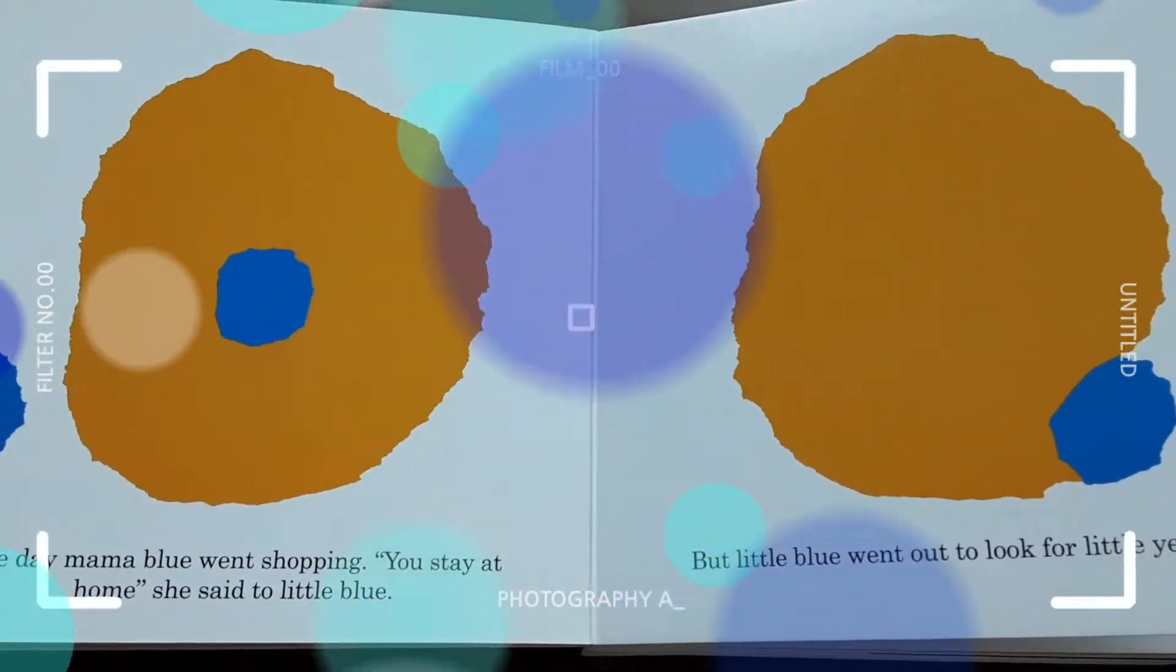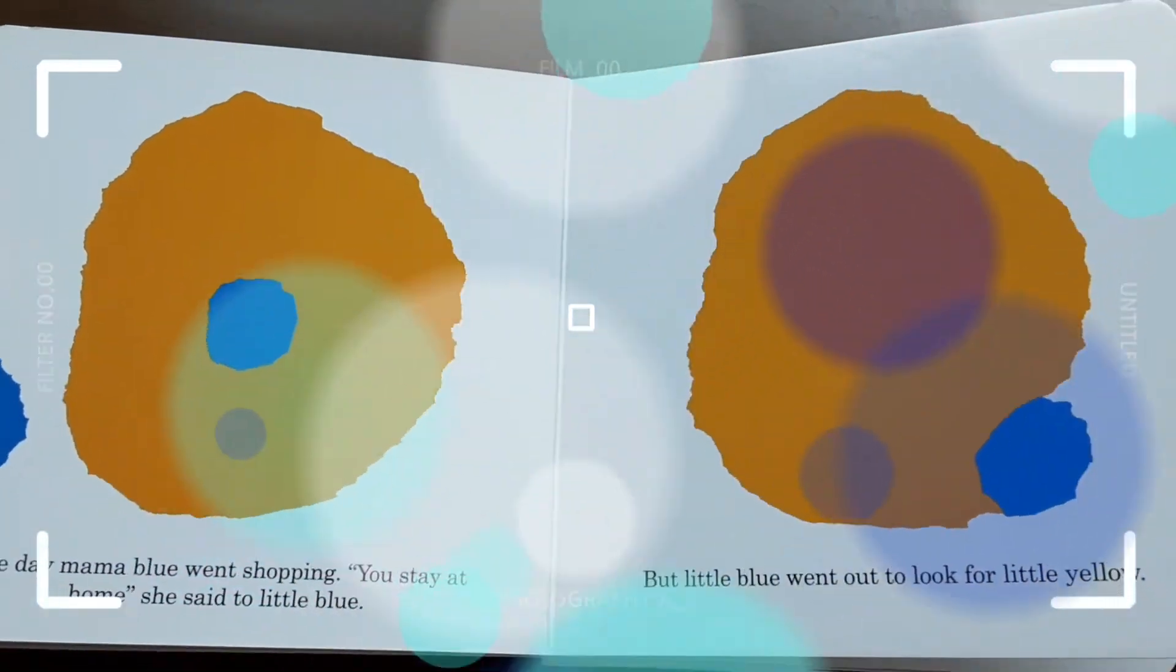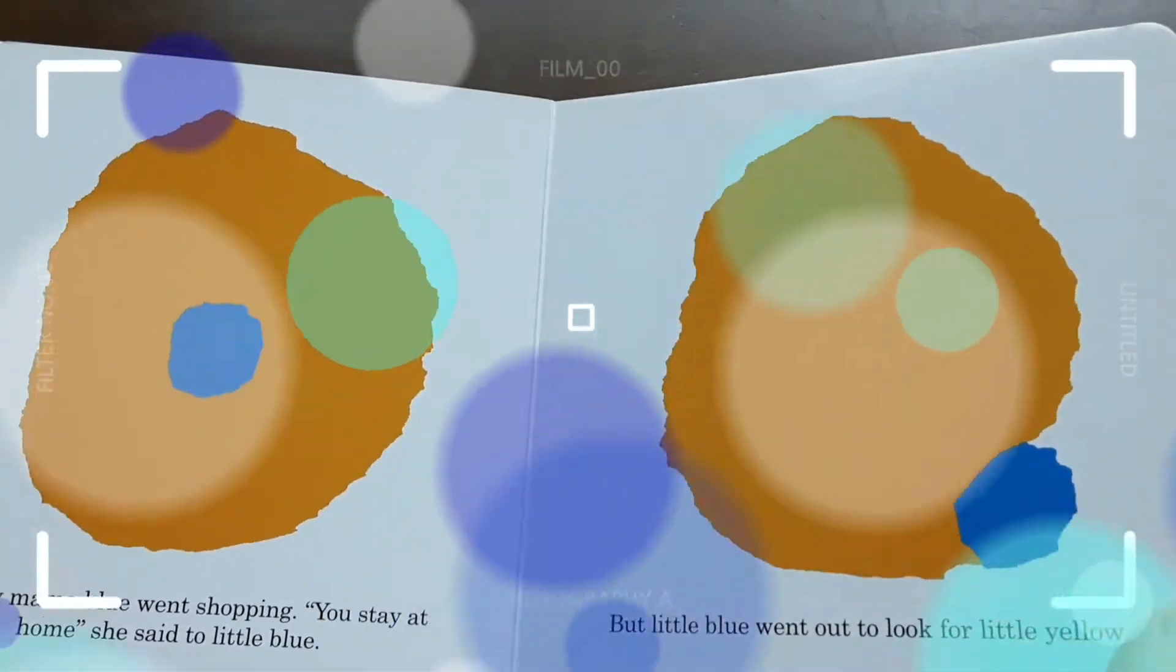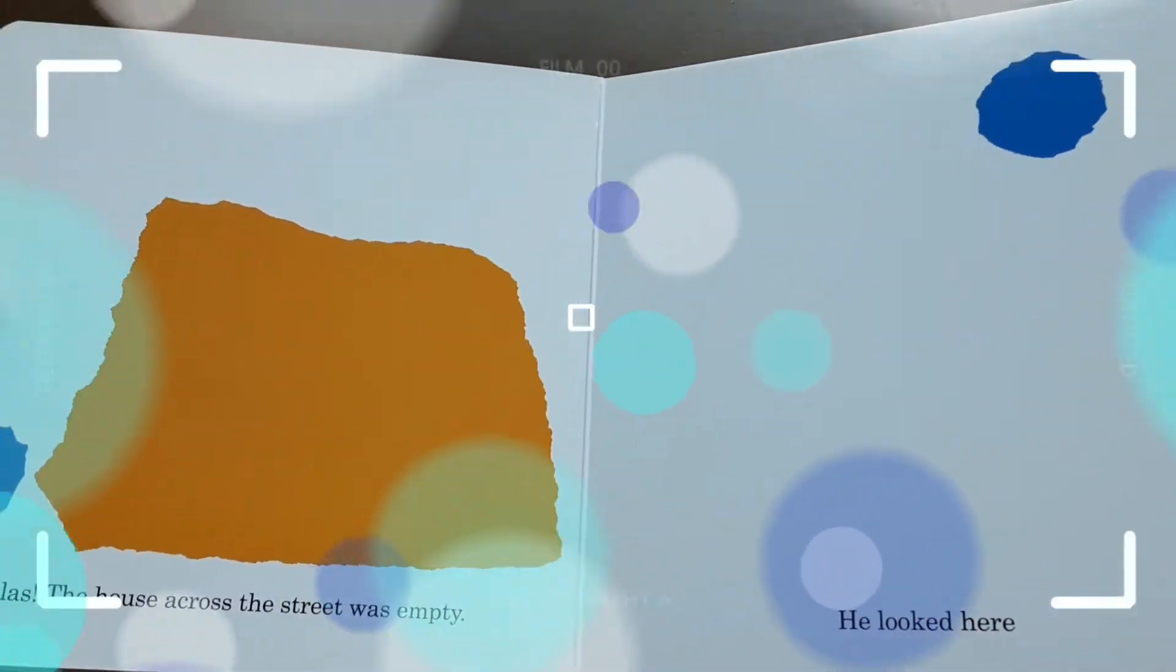One day, Mama Blue went shopping. 'You stay at home,' she said to Little Blue. But Little Blue went out to look for Little Yellow. Alas, the house across the street was empty.